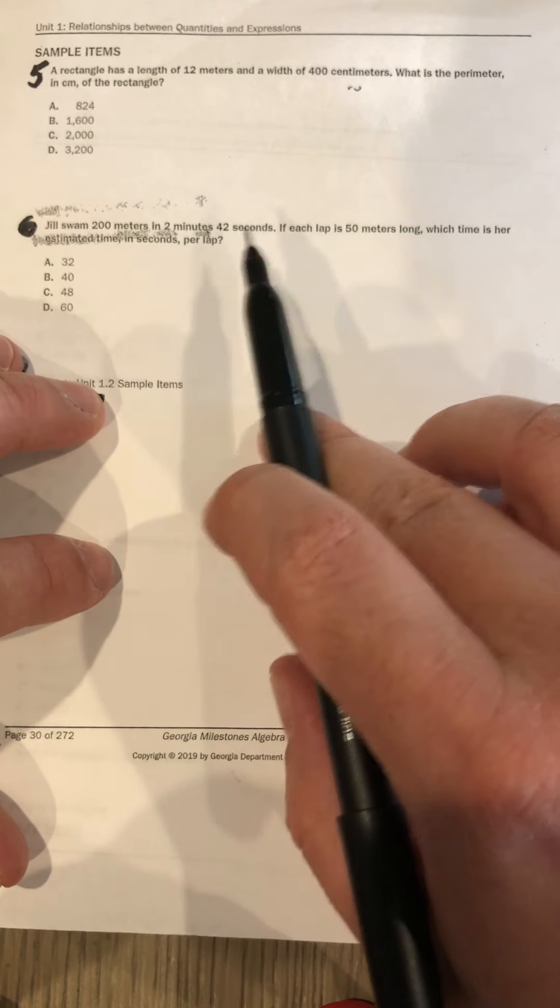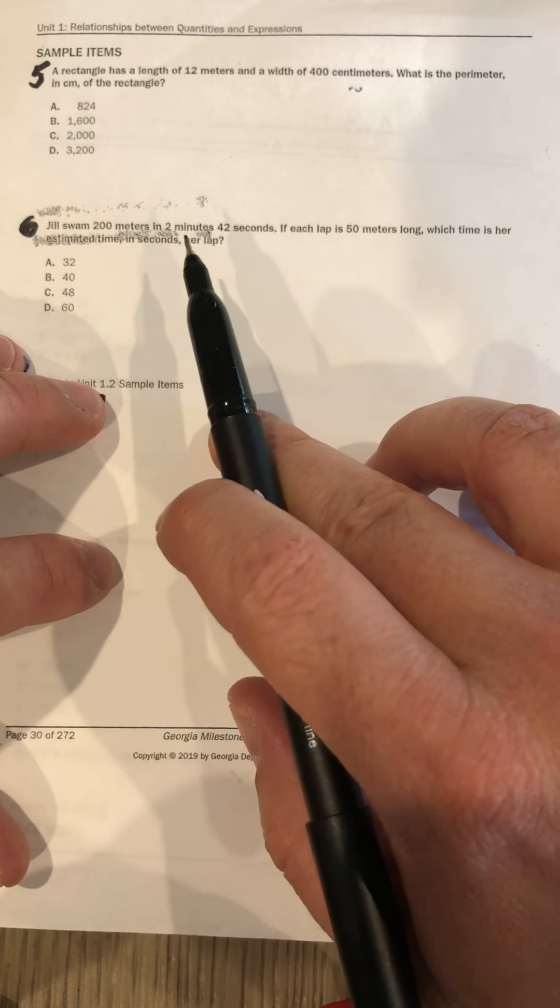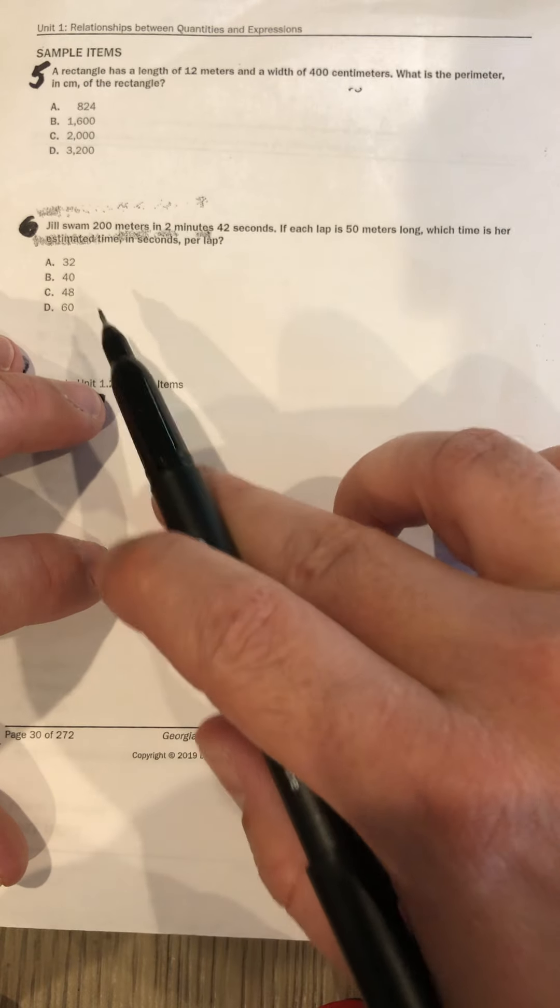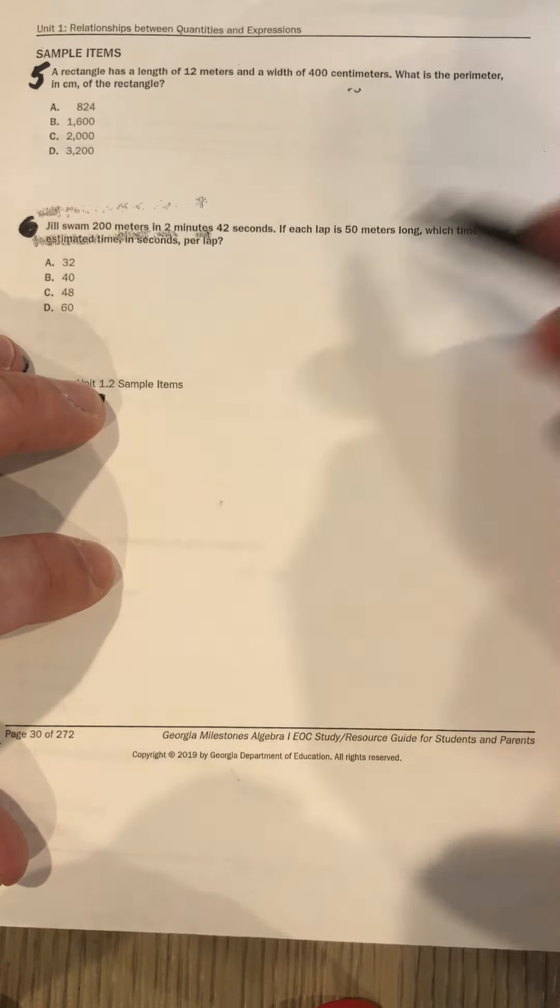Okay, so she did four laps. Convert this to seconds, and then just divide the time by the laps, and then you can see how long it took. Or you can draw it out and have a good time.